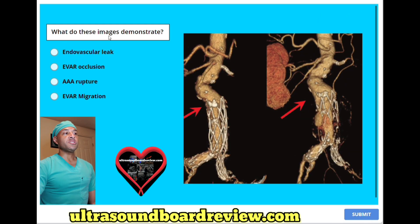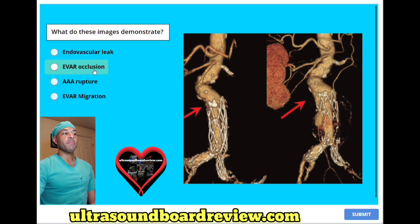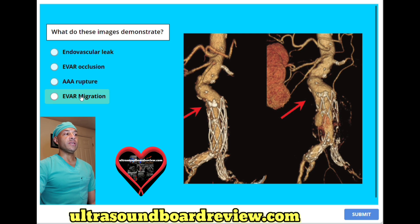What do these images demonstrate? A. Endovascular leak. B. EVAR occlusion. C. AAA rupture. Or D. EVAR migration.